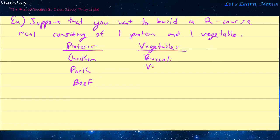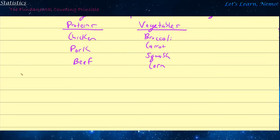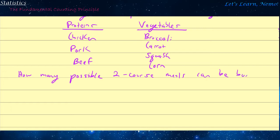And your vegetables — you have the choice of broccoli, carrots, squash, and corn. So one question somebody could ask is: how many possible two-course meals can be built?